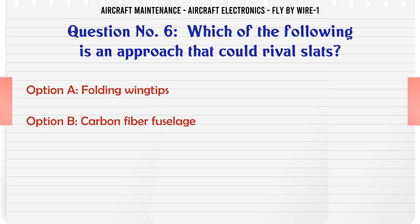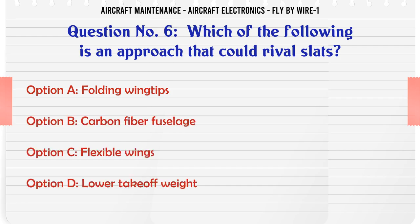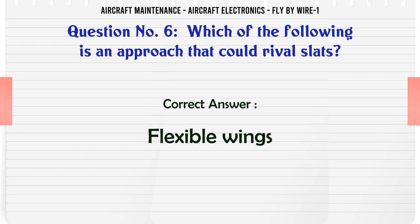Which of the following is an approach that could rival slats? A. Folding wingtips. B. Carbon fiber fuselage. C. Flexible wings. D. Lower take-off weight. The correct answer is: Flexible wings.